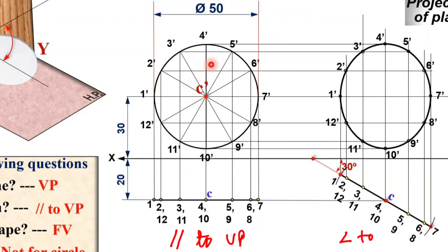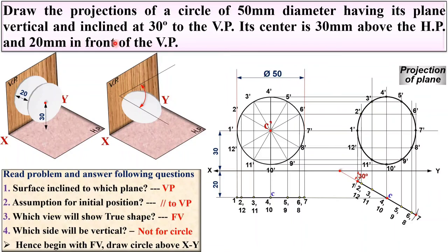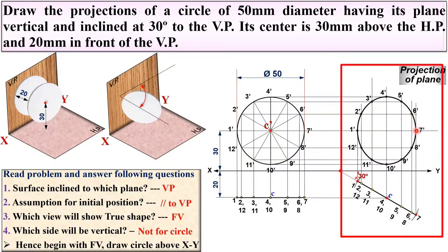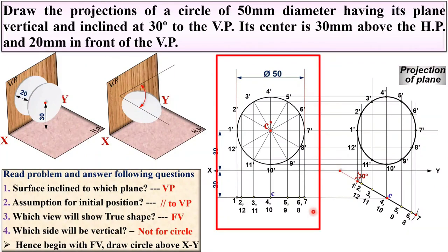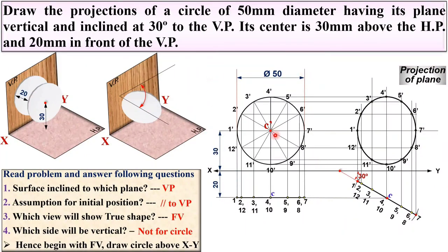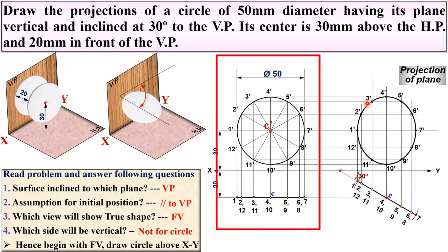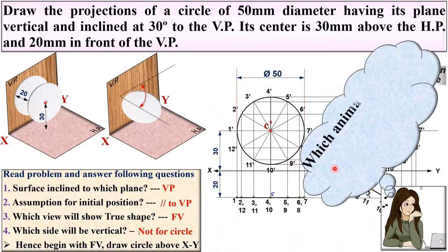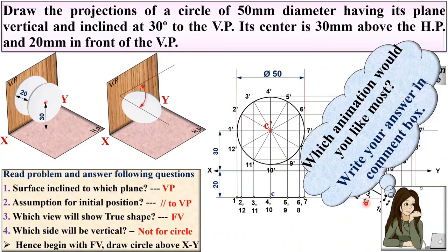Since in the first stage the plane was assumed parallel to VP and in the second stage it is inclined to VP, a third stage inclined to HP would follow — but the inclination with HP is not given, so the problem ends at the second stage. The second stage top view and front view should be drawn dark as the final answer. In the first stage, darken if time permits, but all projections must remain light. Thanks for watching — press the like button to appreciate it.